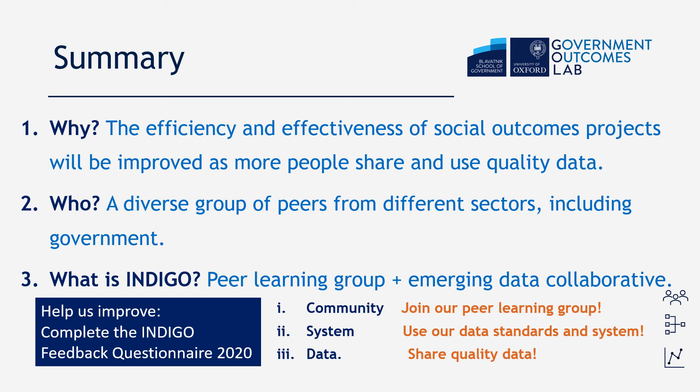In summary — why, who, and what is Indigo? Why? We believe the efficiency and effectiveness of social outcomes projects will be improved as more people share and use quality data. Who? Indigo is for a diverse group of peers from different sectors, including government. What is it? Indigo is a peer learning group and an emerging data collaborative. At the community level, we're asking people to join our peer learning group. At the system level, we want you to use our data standards and the system. And for data, we ask you to share and use quality data. Please help us improve — complete the Indigo Feedback Questionnaire.